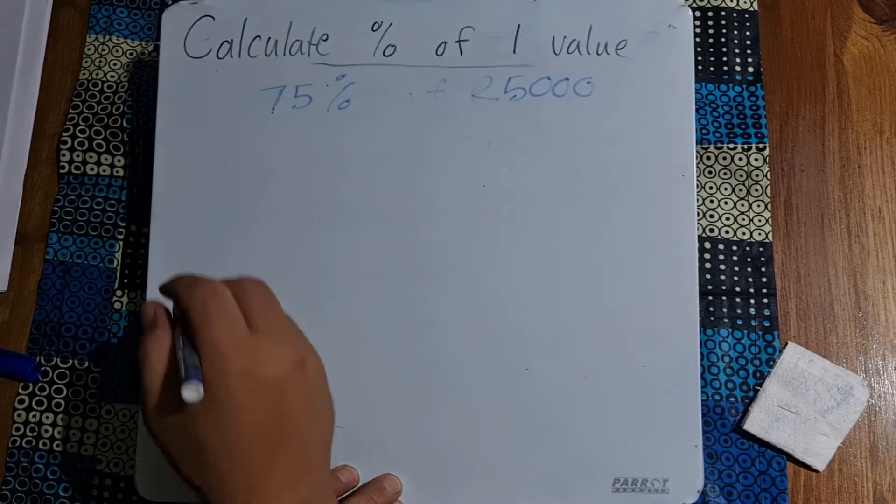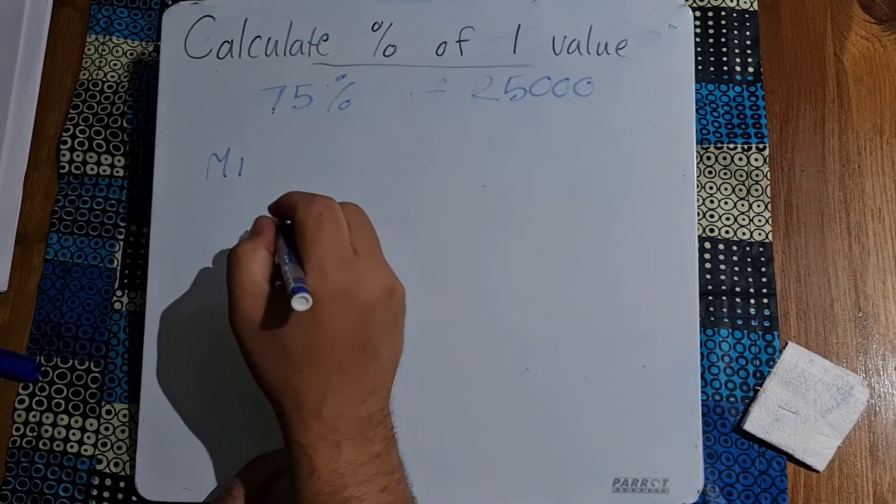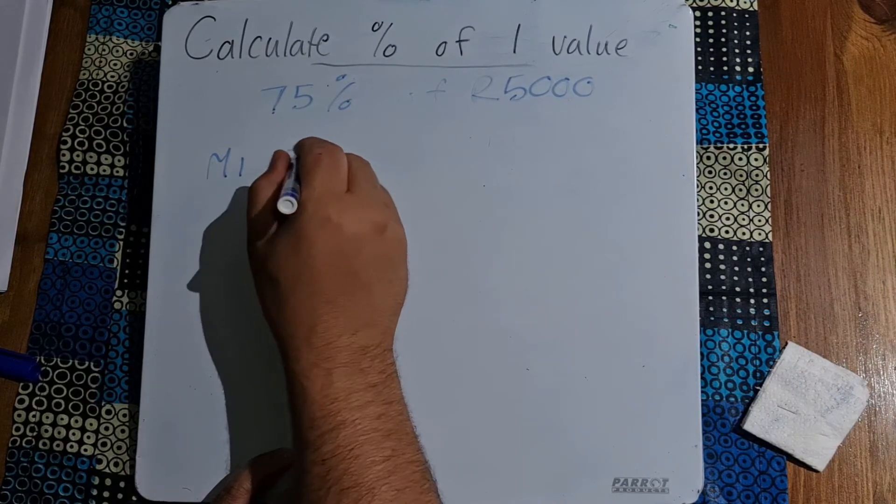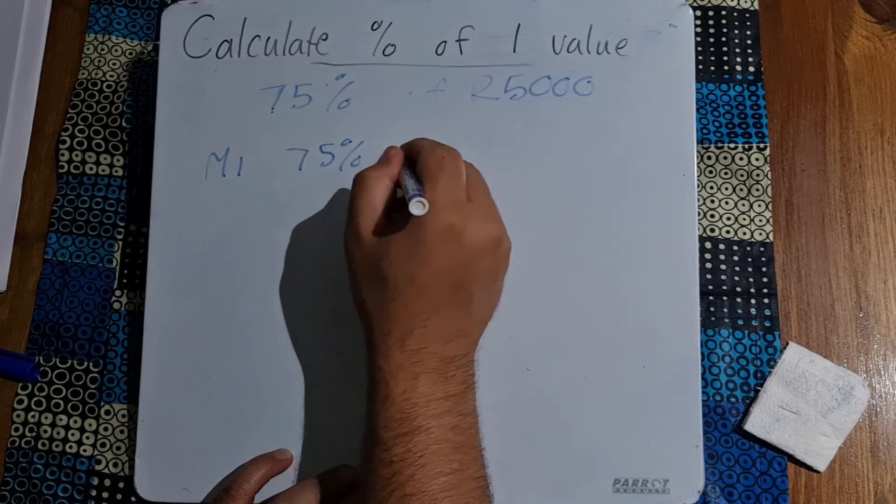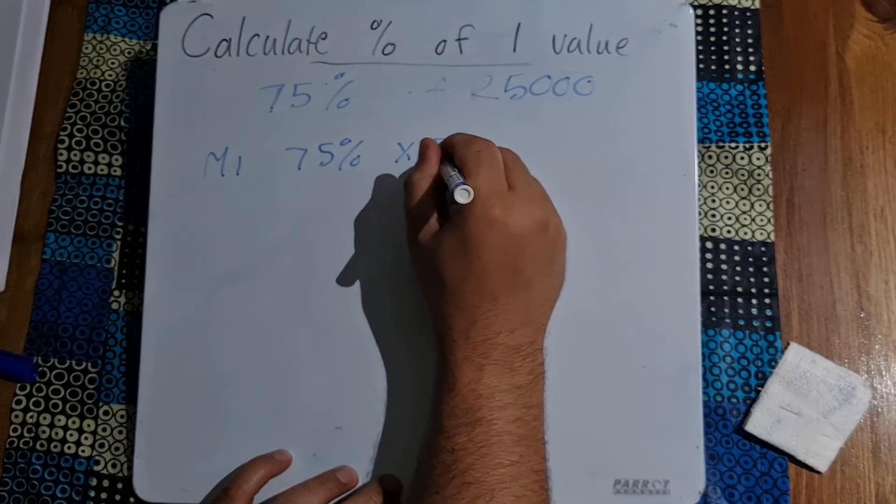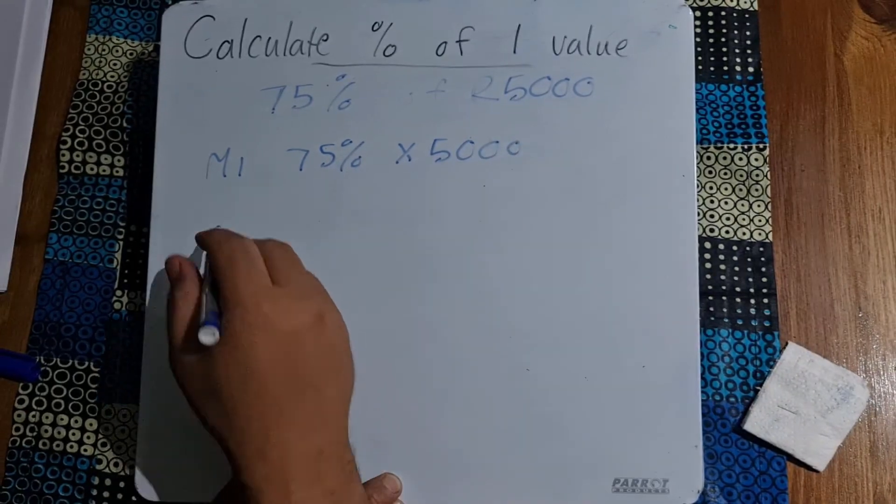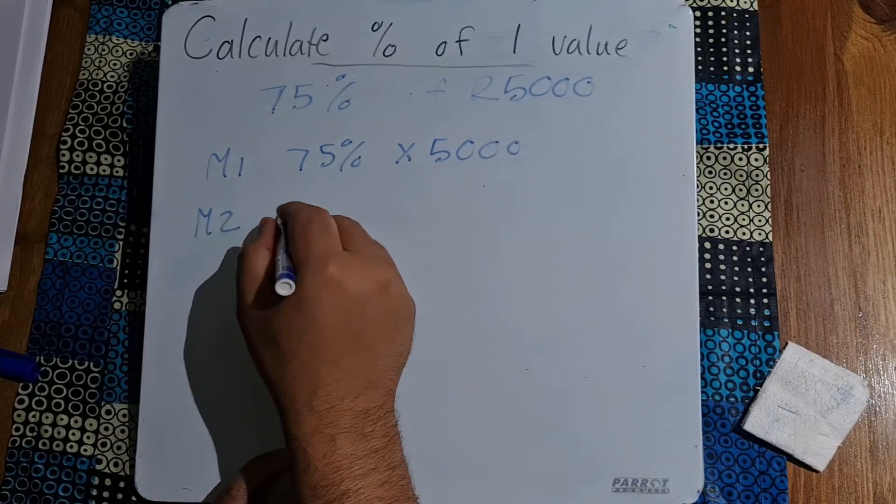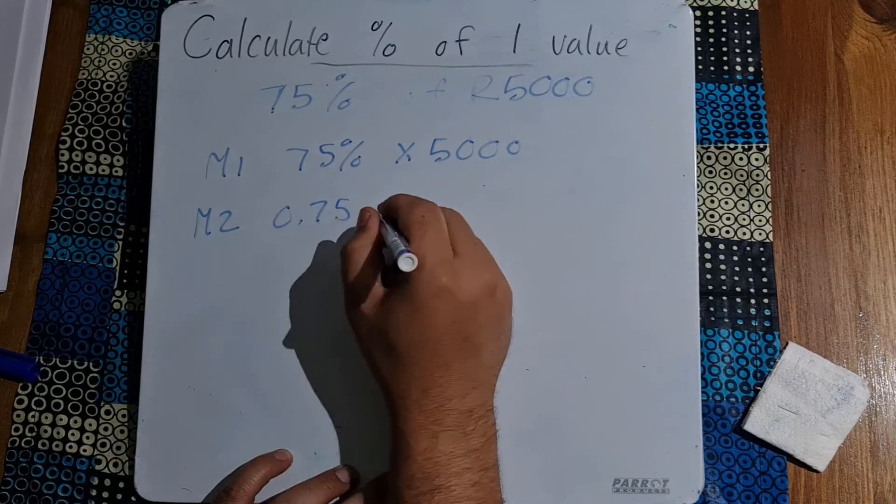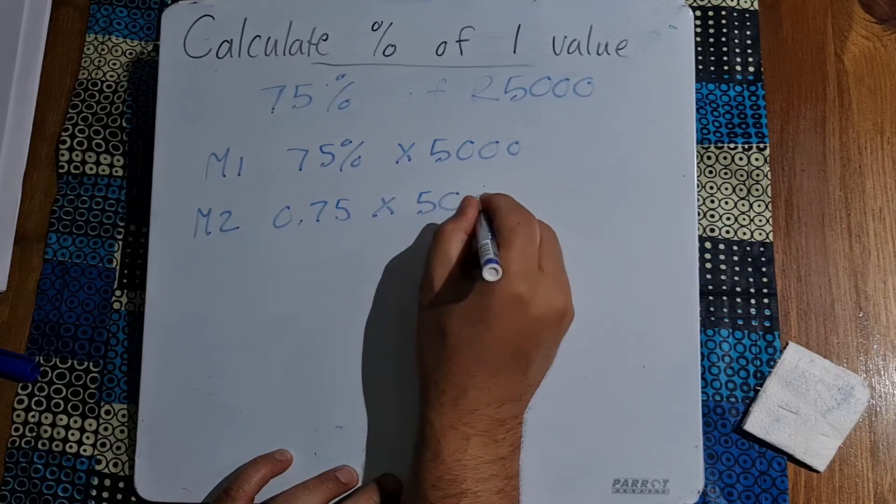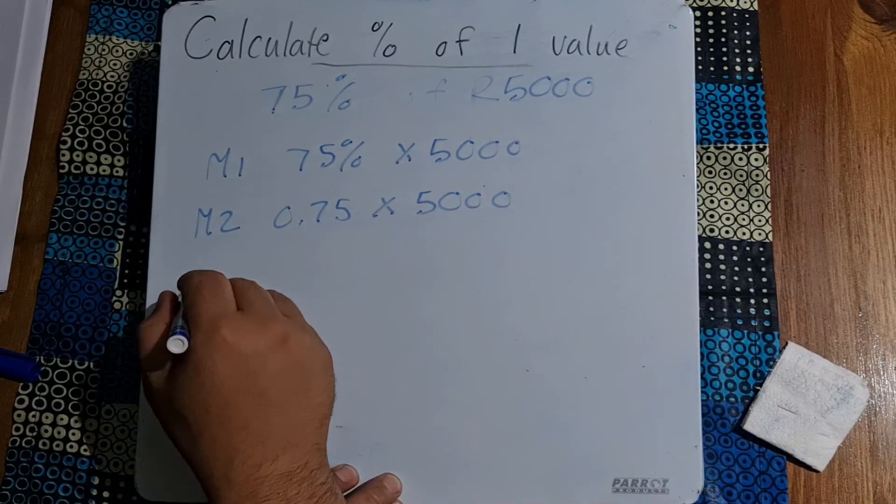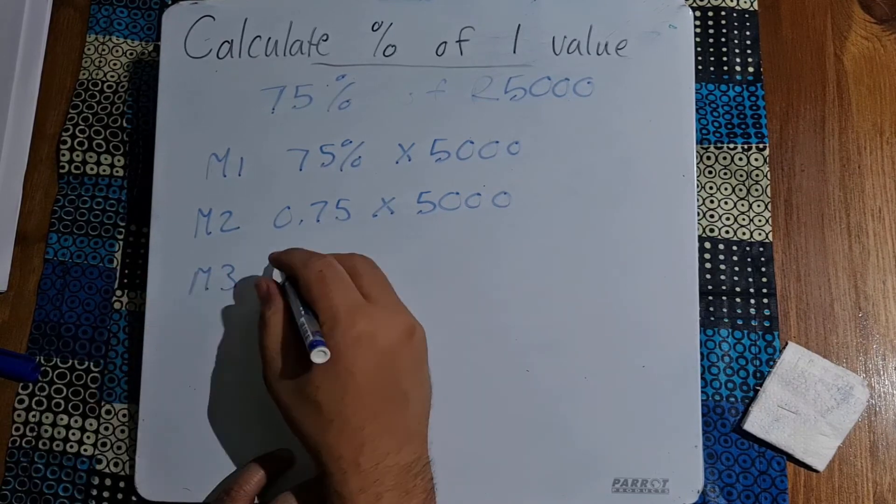Okay so again with method number one what are we going to be doing? We're going to be saying 75 percent on our calculator multiplied by 5,000. Method number two is 0.75 multiplied by 5,000.